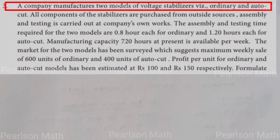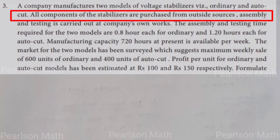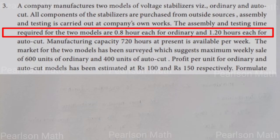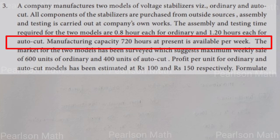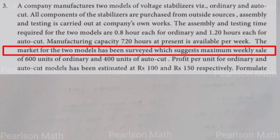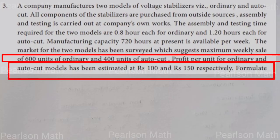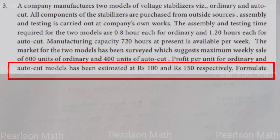Third problem: A company manufactures two models of voltage stabilizer — ordinary and auto cut. All components are purchased from outside sources; assembly and testing is carried out at the company's own works. Assembly and testing time required is 0.8 hours each for ordinary and 1.2 hours for each auto cut. Manufacturing capacity of 720 hours per week is available. Maximum weekly sales are 600 units of ordinary and 400 units of auto cut. Profit per unit is Rs. 100 for ordinary and Rs. 150 for auto cut. Formulate using LPP.